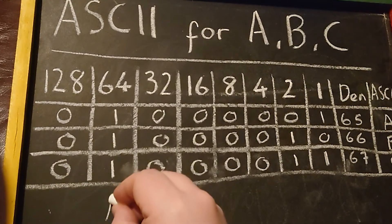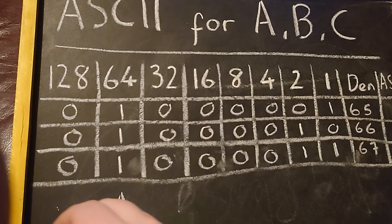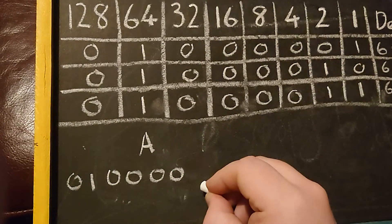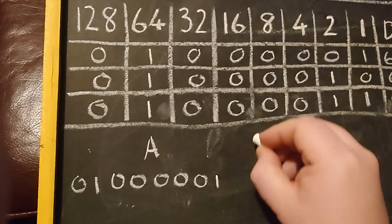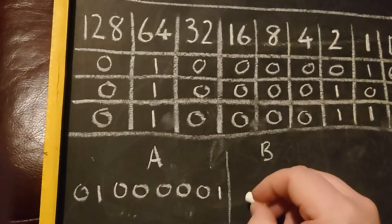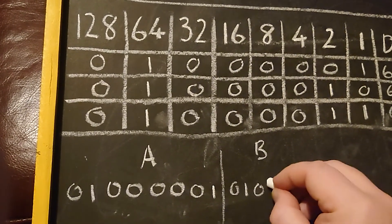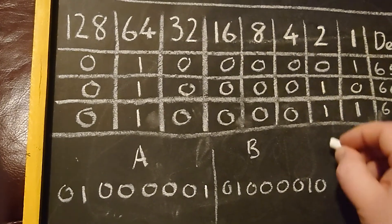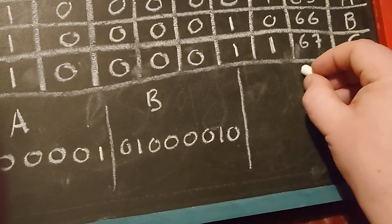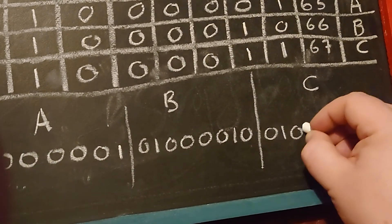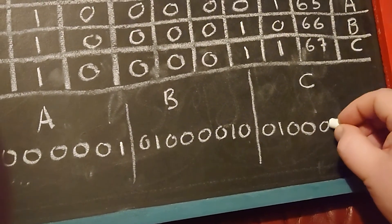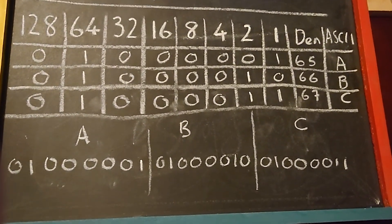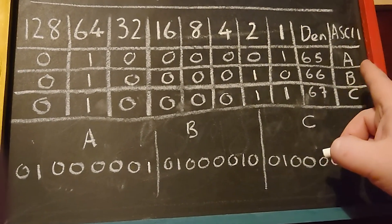So A in binary is 01000001, B is 01000010, and that is how you convert your denary ASCII code into binary.